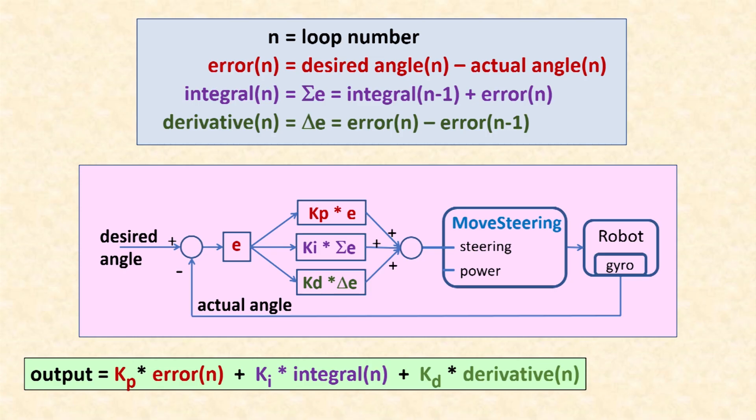PID Control has three parts. Proportional Control is the error times the kp gain. Integral Control is the integral times the ki gain. The integral is the sum of the errors from all the loops, which is calculated by adding the current error to the integral from the prior loop.